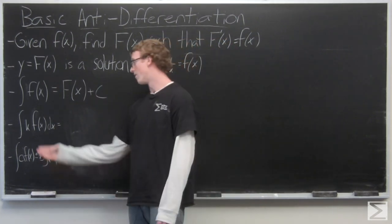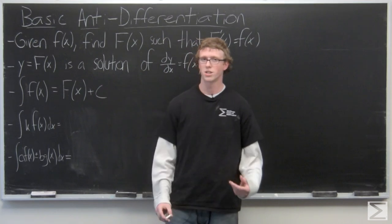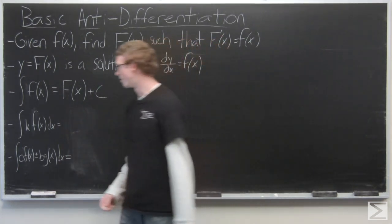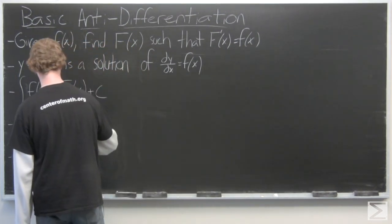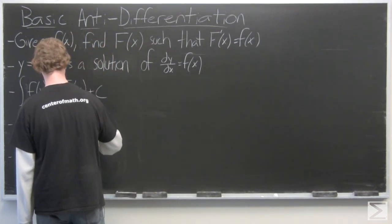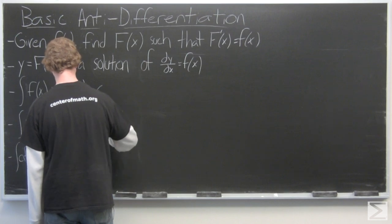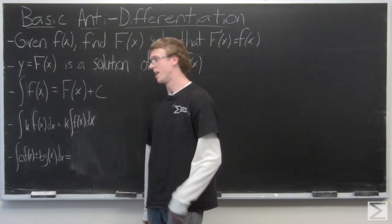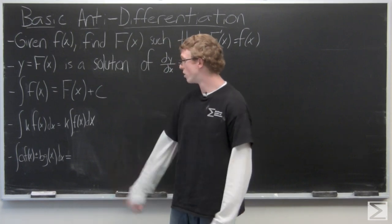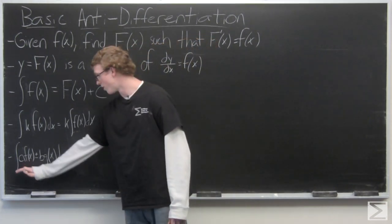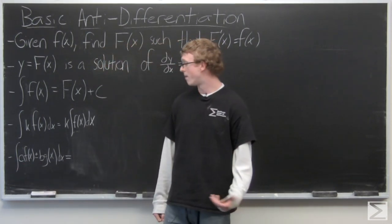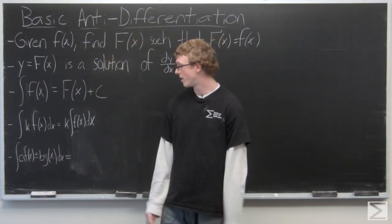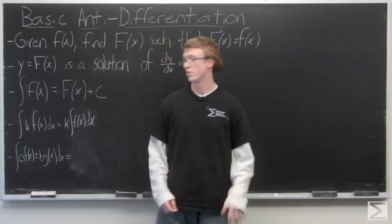When you have integration with a constant times a function, that's just going to be the constant times the integral of the function. Our linearity of anti-differentiation rule tells us that if we have two functions being multiplied by scalars and added or subtracted, we can actually break that into two separate integrals with the constants pulled to the outside.